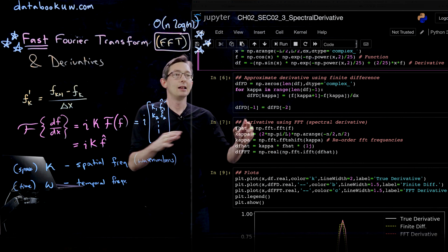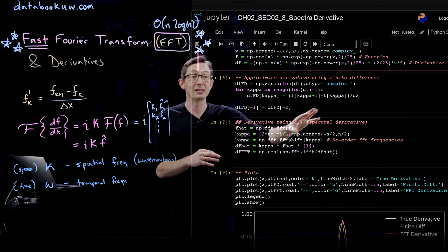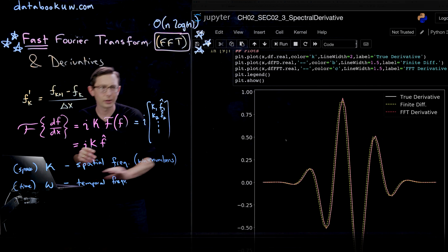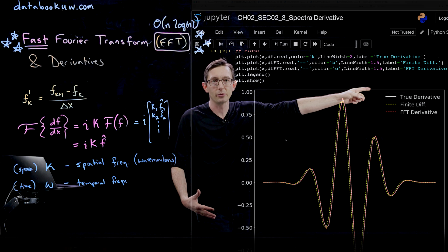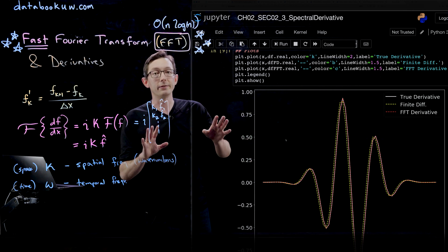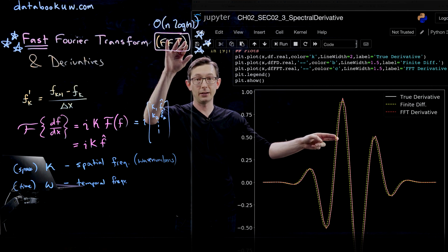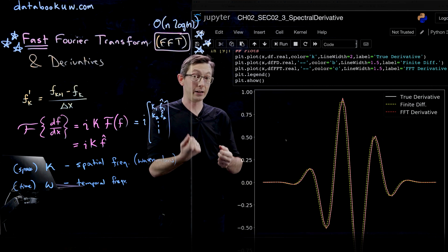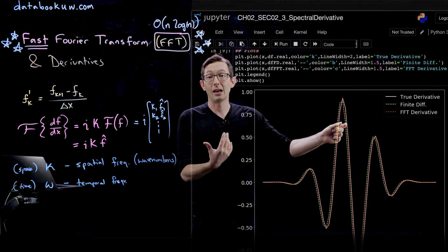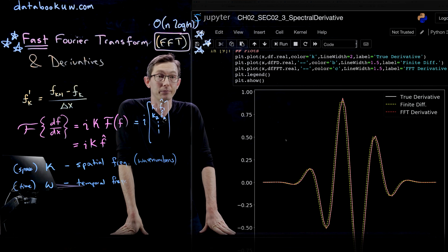Now I'm going to plot the analytic derivative of my function, my finite difference derivative, and my Fourier transform spectral derivative. In white you see the true derivative, the machine precision analytic derivative. Then finite difference in yellow and fft in red. You see very clearly that the red, the spectral derivative using the fft, almost perfectly agrees with the true analytic derivative. Whereas my finite difference deviates quite significantly. There's a lot of error in my yellow curve here because we know this finite difference is not very accurate.